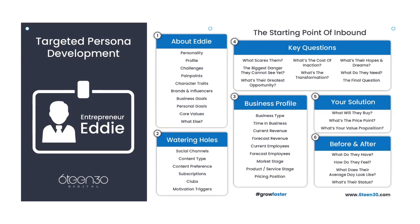Just because someone has got the money doesn't mean you should deal with them if they don't match your persona or your company. First, let's go into the About section — we've got this one about Entrepreneur Eddie, which is our main persona. Underneath About Eddie, we've got challenges, pain points, brands and influences, and business goals.